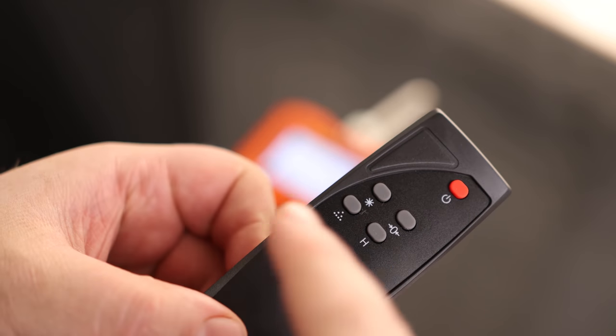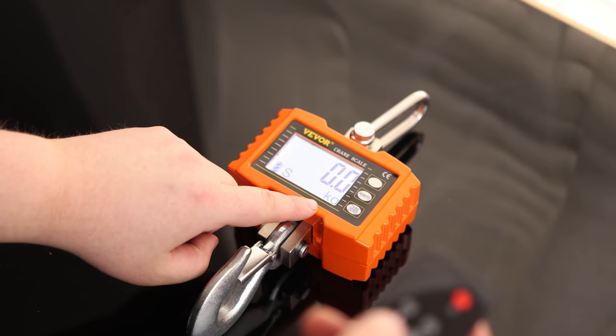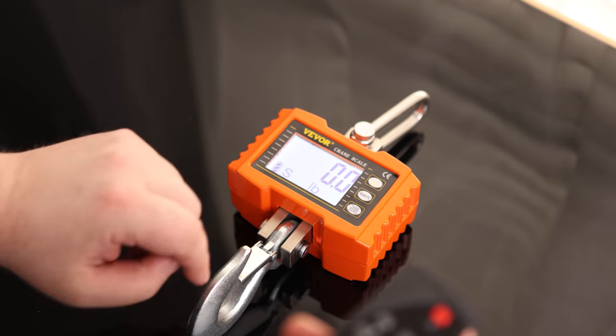This is the power on self-test. So if we want it to recalibrate, we hit that. And then this button will change it from kilograms to pounds. So here we got kilograms, and here we got pounds.